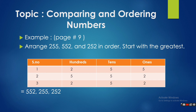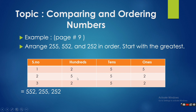First, we write these numbers in a place value chart. The numbers are 255, 552, and 252. We have to start with the greatest, so first just look at the digits in the hundreds place. Which digit is greater? Over here, 5 is greater, so 552 is the greatest number and we write this number first.